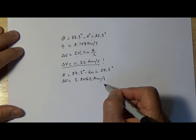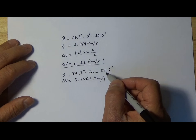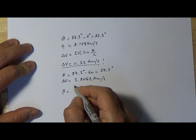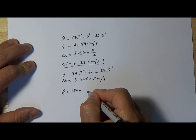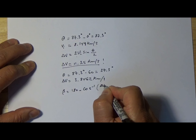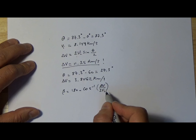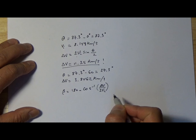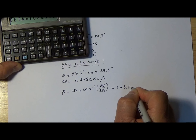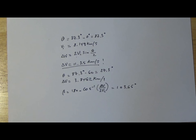We know how much velocity we need to change, but we also need to figure out the angle at which to apply the thrust. To calculate that we use the formula: beta = 180 minus arccos(delta-v / (2 * vi)). We already have all the elements calculated, so we just press run on the calculator — beta equals 103.65 degrees.